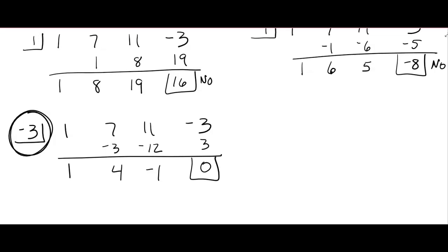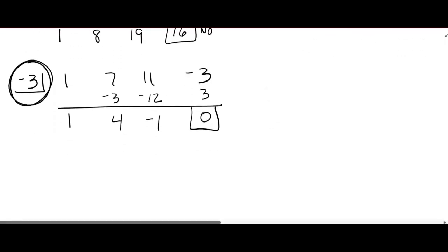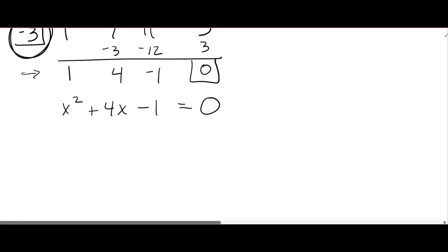So we're supposed to be finding all the 0s and we found one. So it was a third degree polynomial, which means this is a quadratic polynomial. So we have x squared plus 4x minus 1. And we want to know when does that equal 0? Well, guess what? This doesn't factor. So you either can use quadratic formula or you could complete the square. I'm going to complete the square because I think it's easier.